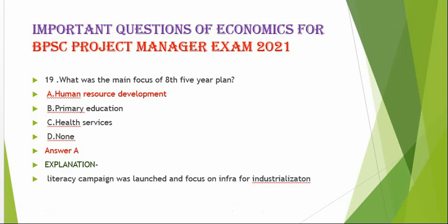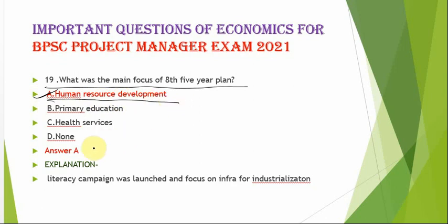The next question is: what was the main focus of the Eighth Five Year Plan? The correct option is option A — human resource development (HRD). A literacy campaign was launched and focus was placed on infrastructure for industrialization. The main focus of the Eighth Five Year Plan was human resource development.